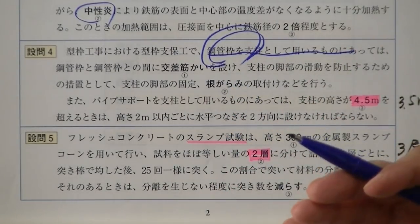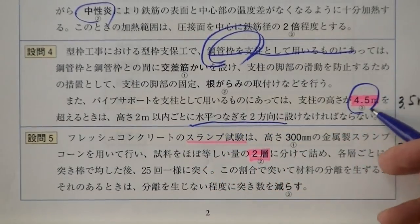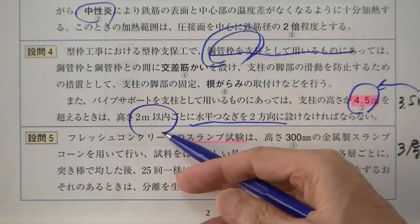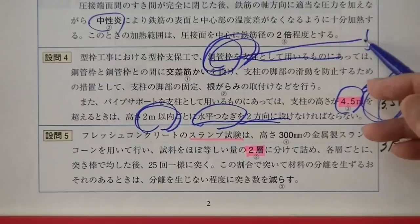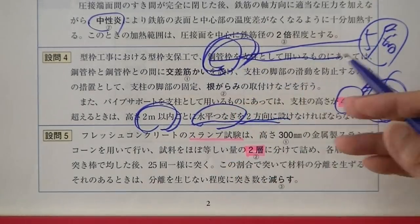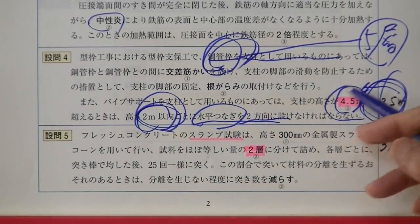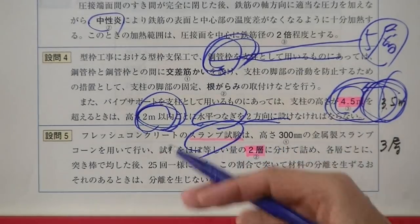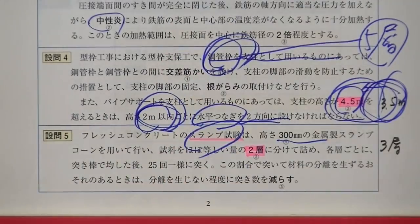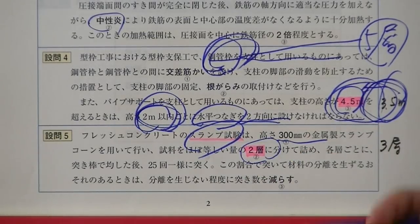4番目は型枠工事。交換枠を支柱で組む場合は5層以内ごとに水平方向縦横に水平つなぎを入れます。パイプサポートの場合は高さ3.5メートルを超えたら2メートル以内ごとに両方向に水平つなぎを設けなければいけない。4.5ではなく3.5メートルが基準です。5番目はスランプ試験。300ミリ（30センチ）の金属型枠を引き上げて、3層に分けて25回突きます。中央のコーンの中央のところが何センチ下がったかを測ります。